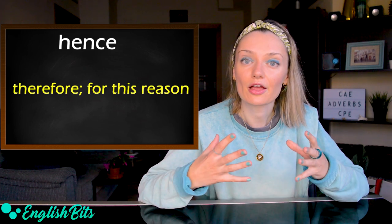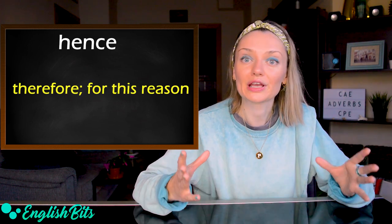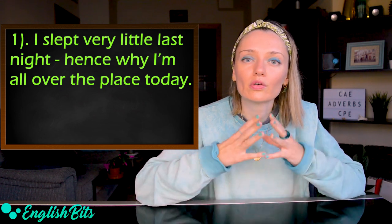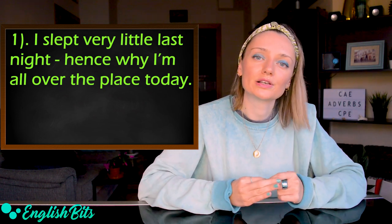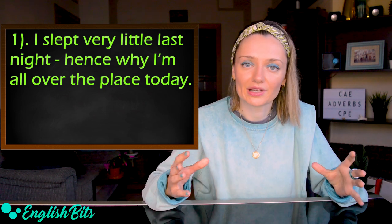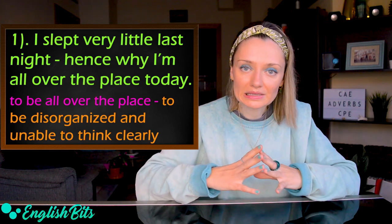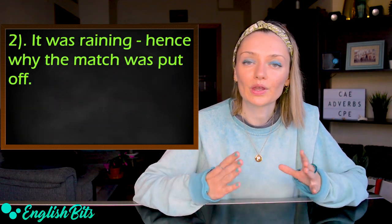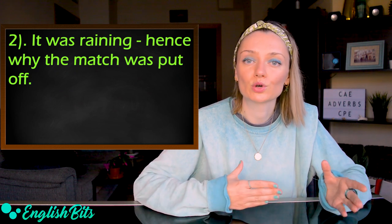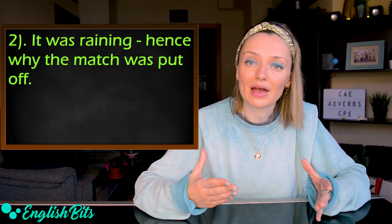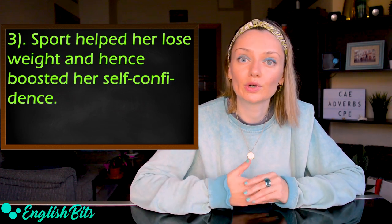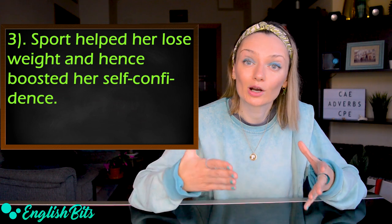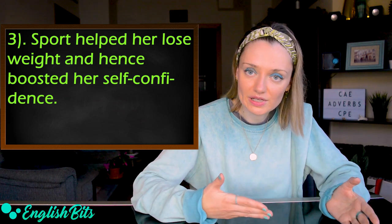Number nine is 'hence,' which means therefore or for this reason. Example one: 'I slept very little last night — hence why I'm all over the place today.' To be all over the place means to be disorganized and unable to think clearly. Example two: 'It was raining — hence why the match was put off.' Example three: 'Sport helped her lose weight and hence boosted her self-confidence.'